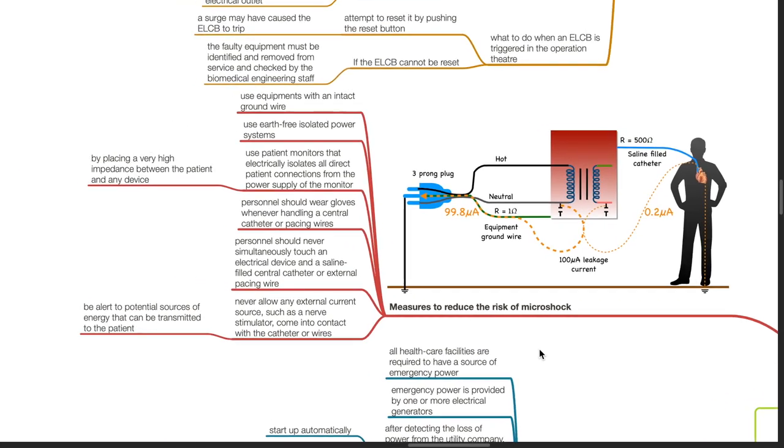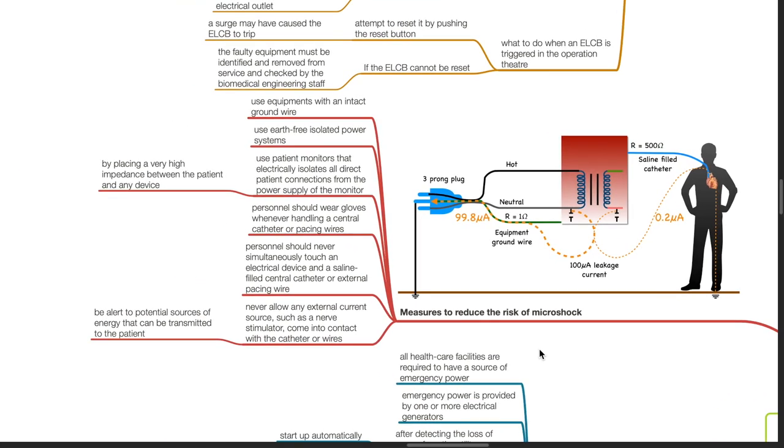Measures to reduce the risk of microshock: Use equipment with an intact ground wire. Use earth-free isolated power systems. Use patient monitors that electrically isolate all direct patient connections from the power supply by placing a very high impedance between the patient and any device. Personnel should wear gloves whenever handling a central catheter or pacing wires. Personnel should never simultaneously touch an electrical device and a saline-filled central catheter or external pacing wire. Never allow any external current source, such as a nerve stimulator, to come into contact with the catheter or wires. Be alert to potential sources of energy that can be transmitted to the patient.